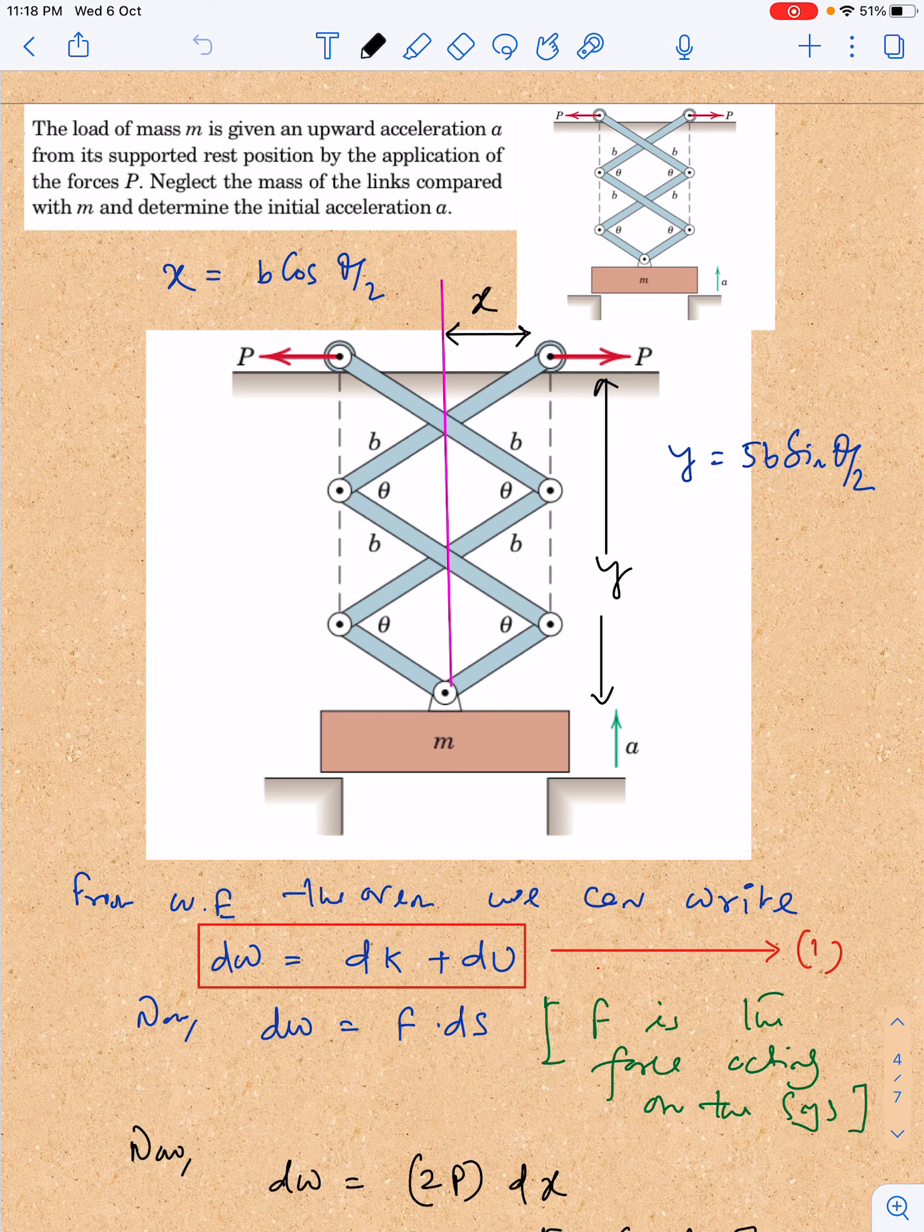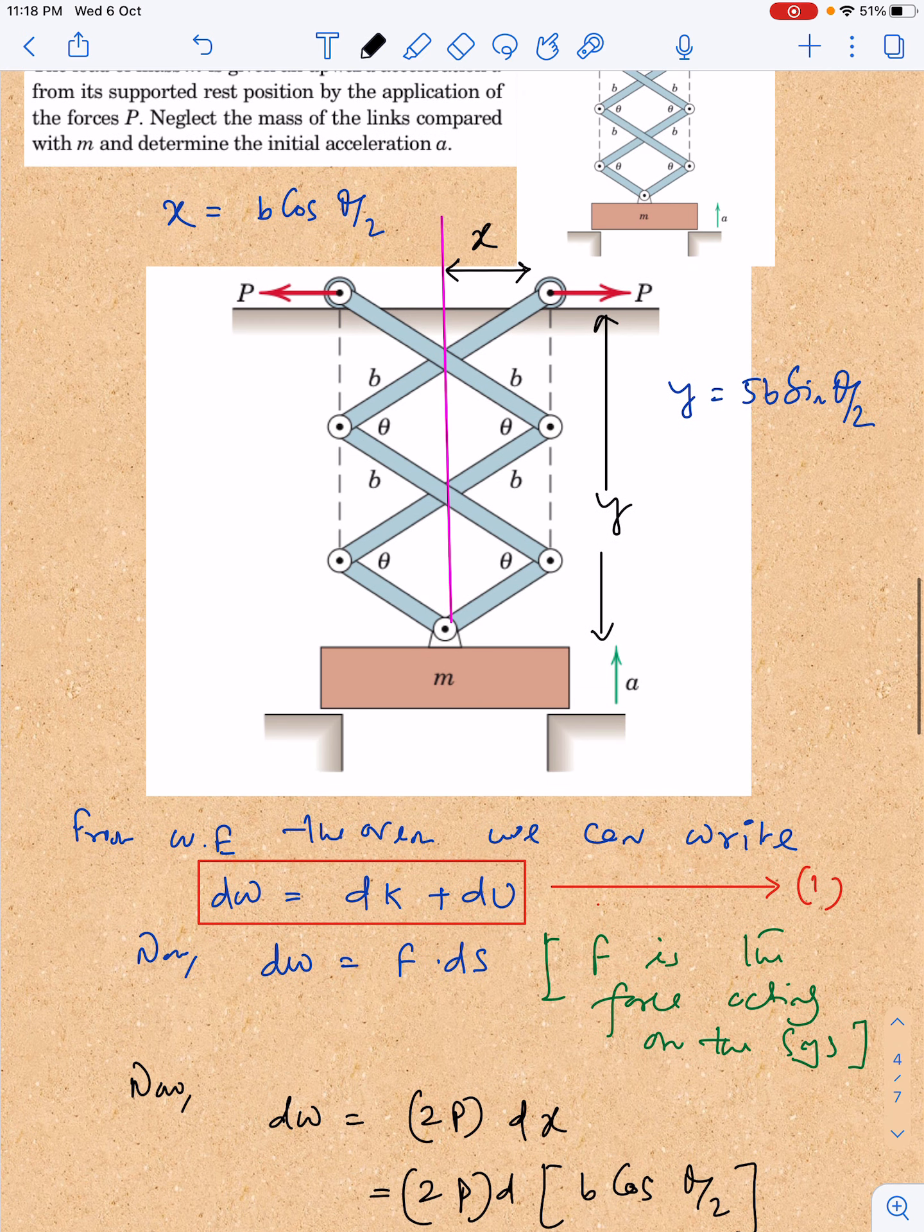Here in this diagram, you can see there is a load of mass m. This structure is there, and it is given that this mass is being lifted with some acceleration a because of the two forces P acting horizontally. That's the main statement, and they are asking to calculate the value of a.